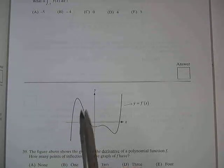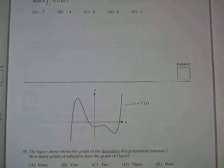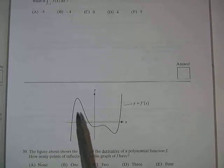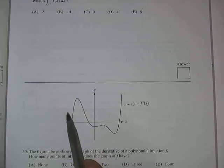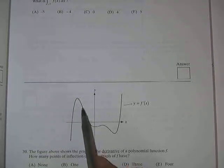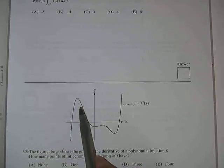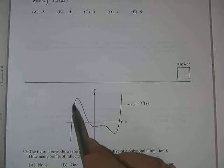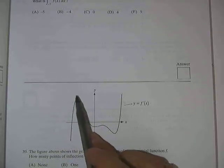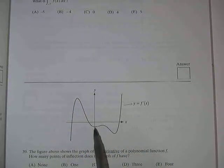Remember, in order to be an inflection point there also has to be a change in concavity. So the question is: does the second derivative go from positive to negative? Remember, the second derivative is the derivative of this picture. So the derivative goes from positive to negative here — so that means this would count as one.